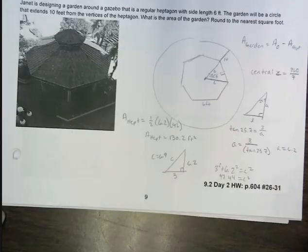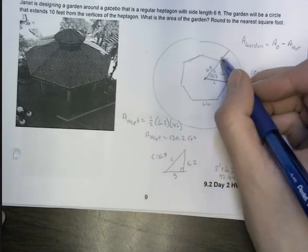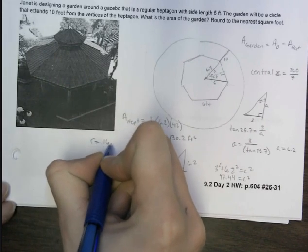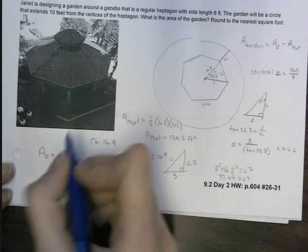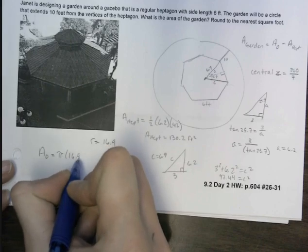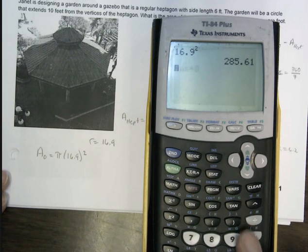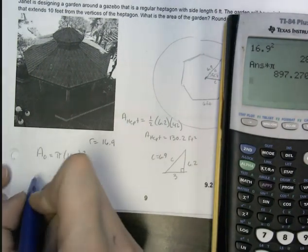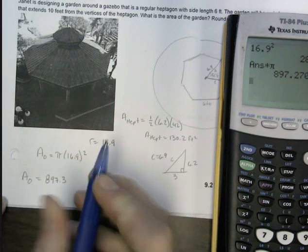So then my radius, so the circle, we just found that this is 6.9. So now the radius is 6.9 plus 10. So my radius is equal to about 16.9. So now that I have the radius, I can find the area of the circle. So area of the circle is pi times r squared. So we'll do 16.9 squared. And then times pi. So I got 897.3.